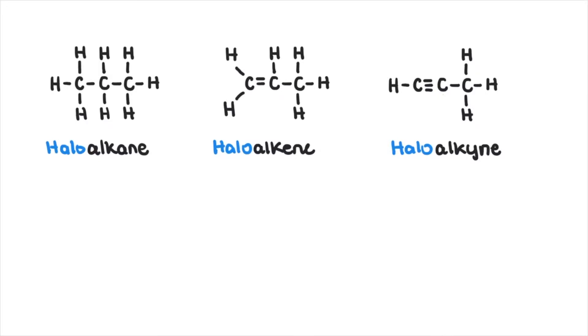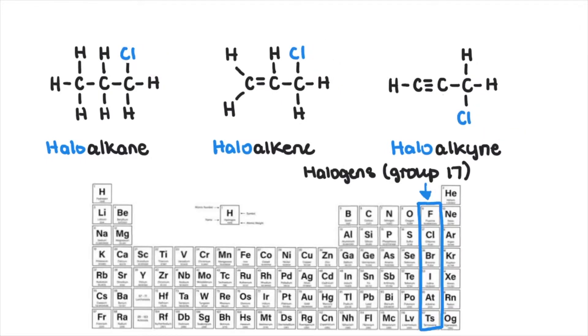Haloalkanes, haloalkenes, and haloalkynes are those that have one or more of their hydrogen replaced with a halogen, you know from group 17. These dramatically change the properties of the hydrocarbon and hence have numerous uses in industry.